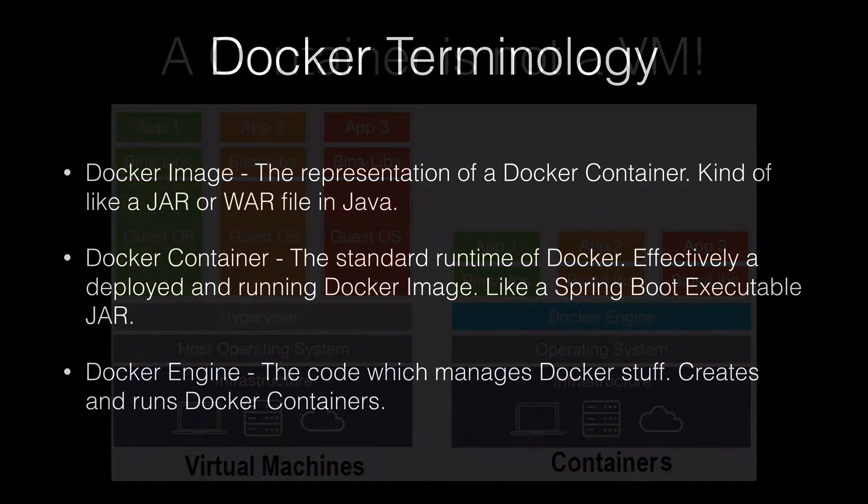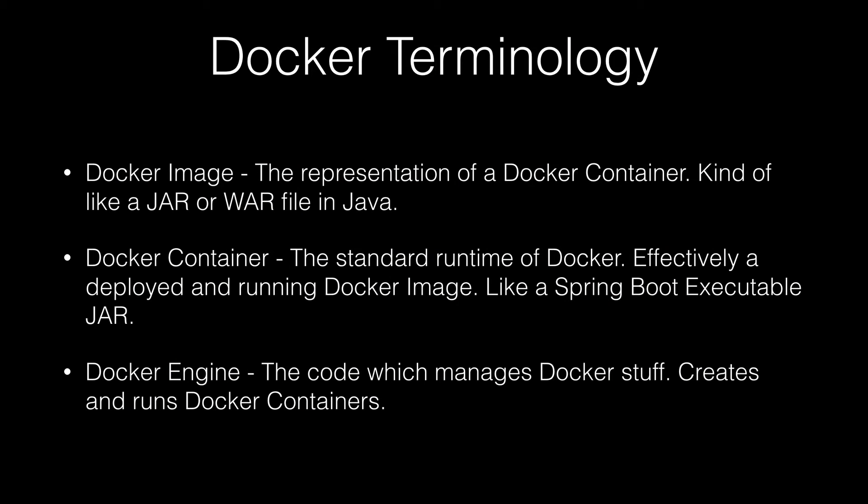Let's get into some common Docker terminology. A Docker image is a representation of a Docker container — in the Java world it's like a WAR or JAR file. A Docker container is like the standard runtime, roughly equivalent to running an executable JAR running inside the JVM, self-contained. The Docker engine is what manages all the Docker infrastructure: it creates and allocates Docker containers, starts and shuts them down, and allows them access to system resources such as directories on the host operating system or network resources.